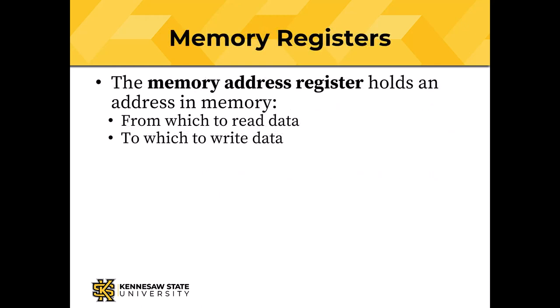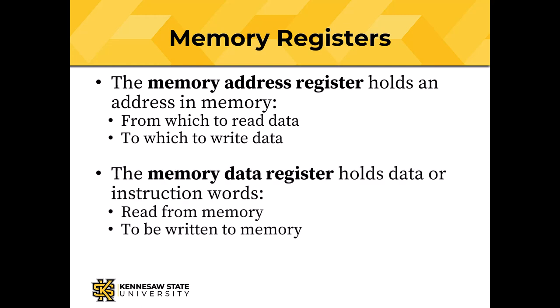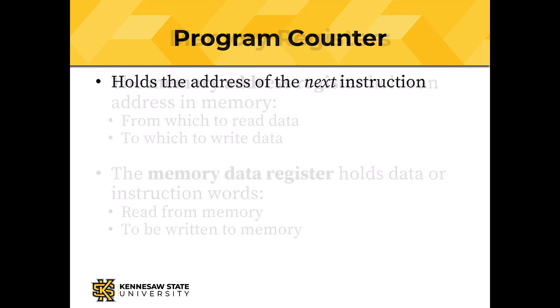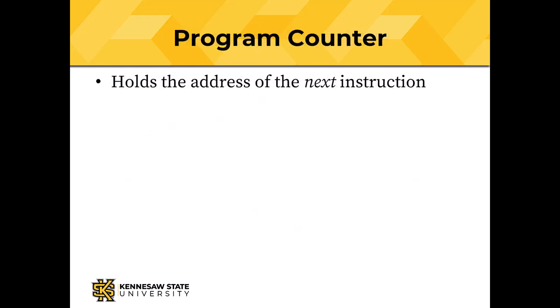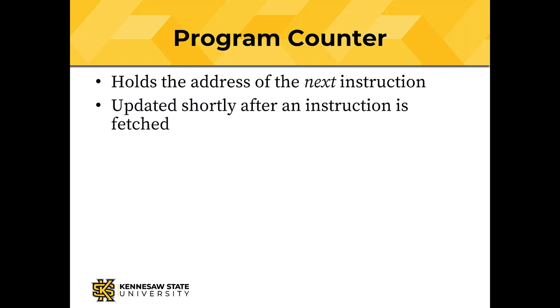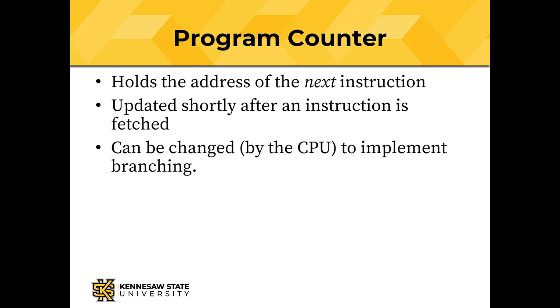There are two memory registers. The memory address register holds an address in memory either from which to read data or to which to write data. The memory data register holds the actual data — data or instruction words that have been read from memory, or that are to be written to memory. The program counter holds the address of the next instruction, and that is central to the way von Neumann architecture computers work. The program counter gets updated shortly after each instruction is fetched, and it can be changed by the CPU to implement branching.